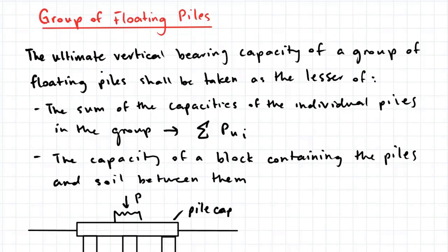The ultimate vertical bearing capacity of a group of floating piles shall be taken to be the lesser of the following: the sum of the capacities of the individual piles in the group, or the capacity of a block containing the piles and the soil between them.